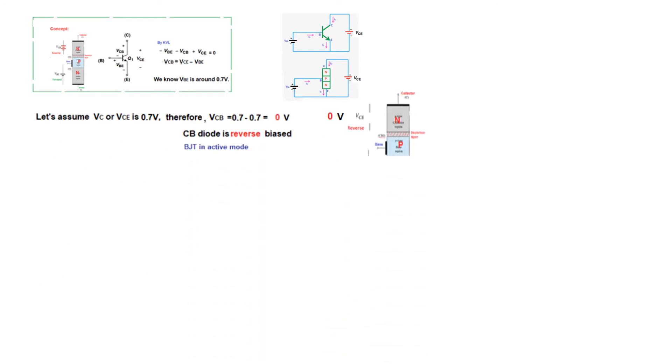So we were here. Now let's reduce the VCE to 0.7 volt. Therefore VCB from here will be 0.7 minus 0.7, so 0 volt. So now there is 0 volt across this PN junction. But still the diode is reversed biased. And we are therefore in active mode. And if you now see this diode characteristics diagram, we are at this place.